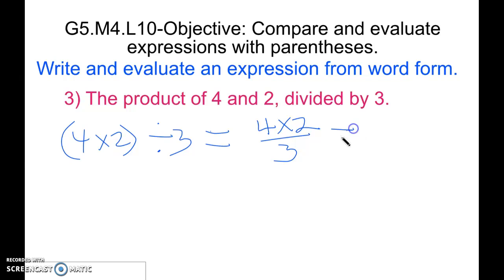Continuing, we'll discover that 4 times 2 equals 8 thirds. And then simplified, this will equal 2 and 2 thirds.